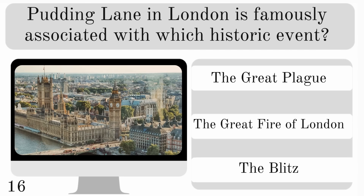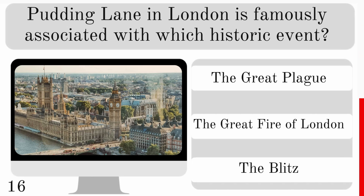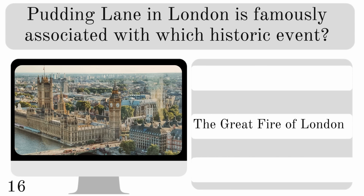Pudding Lane in London is famously associated with which historic event? The Great Plague, the Great Fire of London or the Blitz? And it's said to be the starting place of the Great Fire of London.